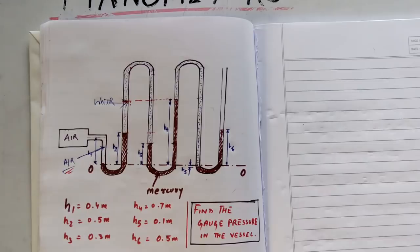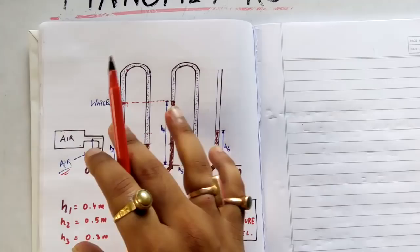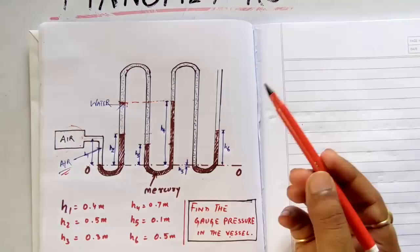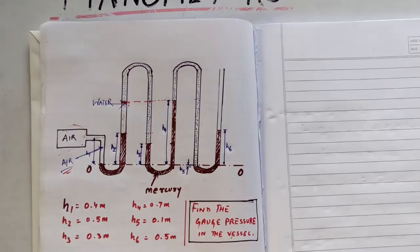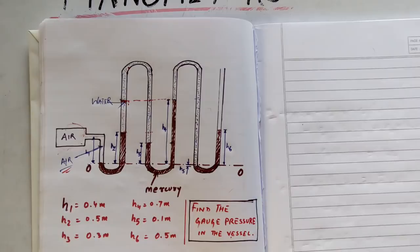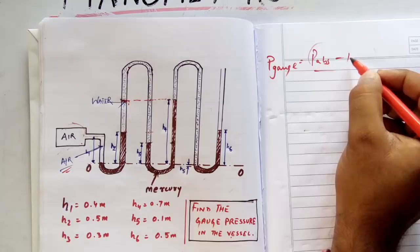In this problem you need to find the gauge pressure in the vessel. This vessel contains air and you need to find the gauge pressure. Gauge pressure is nothing but the absolute pressure in this vessel minus the atmospheric pressure. This end is open to the atmosphere, so you can get the atmospheric pressure easily.